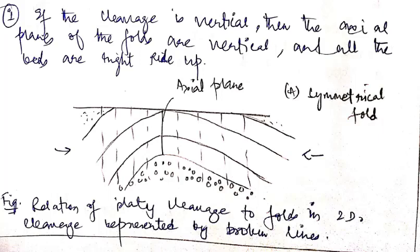If the cleavage is vertical, then the axial planes of the folds are vertical and all the beds are right side up. This means the stratigraphy is as found in nature — the lower beds are older and the upper beds are the youngest. This is the relationship between slaty cleavage and the fold.